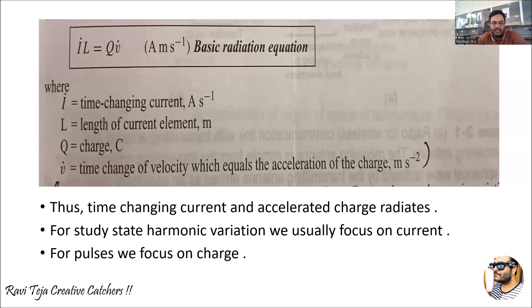In this equation, I-dot is the time-changing current — as the electromagnetic wave moves through the antenna the current changes with respect to time — measured in amperes per second. L is the length of the current element, measured in meters. q is the charge, denoted by C. And v-dot is the time rate of change of velocity, which equals the acceleration of the charge, measured in meters per second squared.